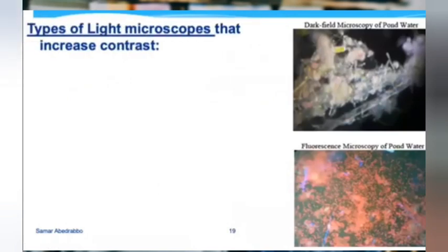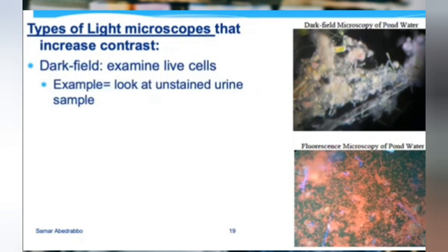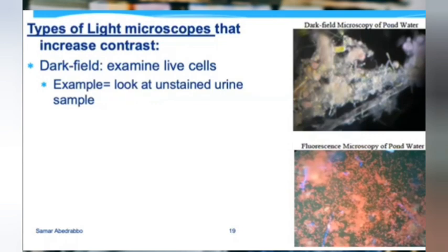Two types of light microscopes that increase contrast are dark field microscopy and fluorescence microscopy. Dark field microscopy works by putting a dark background behind transparent organisms — if you have a white object on a white background you can't see it, but on a dark background you can. So dark field microscopy gives you a dark background so you can see transparent organisms without staining them.